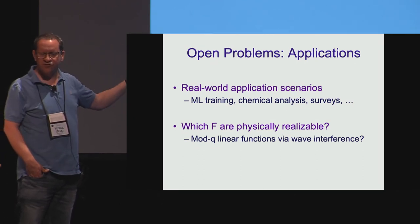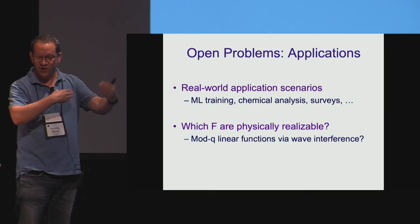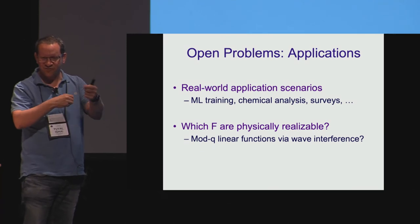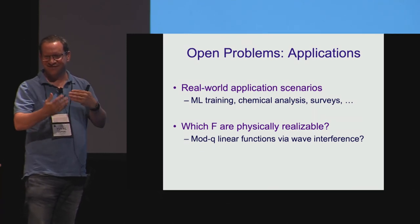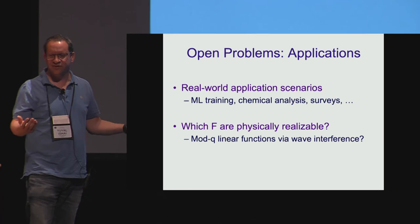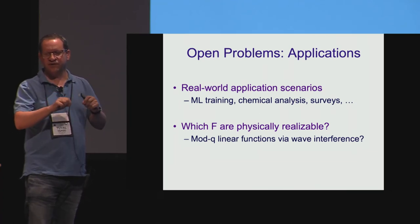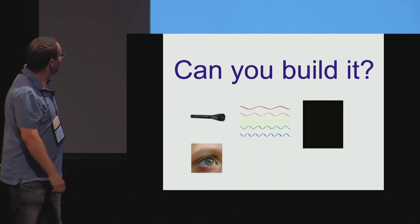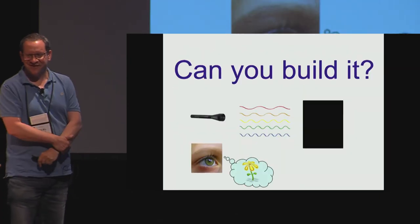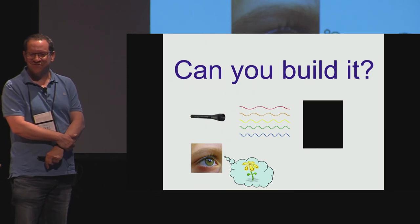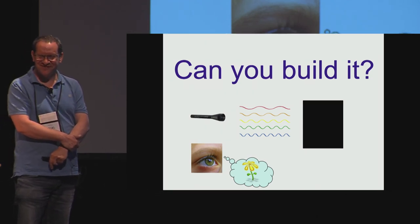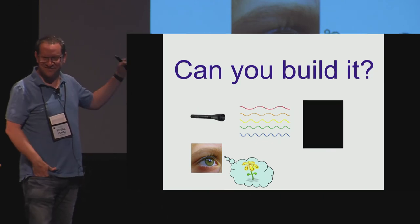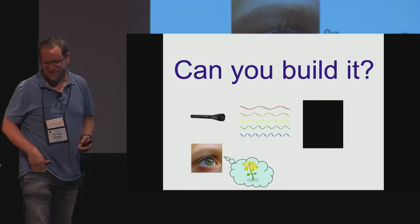For instance, if you want to directly implement mod-q measurements, you can think of using waves. However, waves don't just add the phase but also the amplitude. We weren't able to use waves to get directly a linear functions modulo-q without leaking everything. And really, the final question is: will somebody ever build a cryptographic flashlight using some physical measurement? If the parameters are tightened, I don't see any inherent impossibility. Thank you.